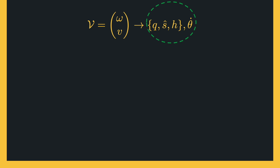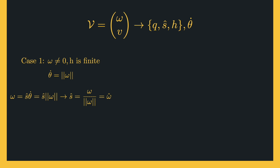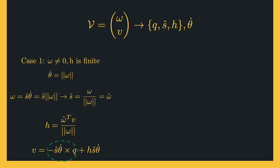Going in the reverse fashion: if we have the twist and want to find the screw axis and theta-dot that generate the same twist, we have two cases. Case one is where we have rotational motion and the screw pitch is finite. If the angular velocity is not zero, we have rotational motion and pitch h is finite. Theta-dot is the norm of the angular velocity vector, and from omega = ŝ·theta-dot we can find ŝ. The pitch can be calculated using this equation, and q is chosen so that the term –ŝ·theta-dot × q provides the portion of v orthogonal to the screw axis.